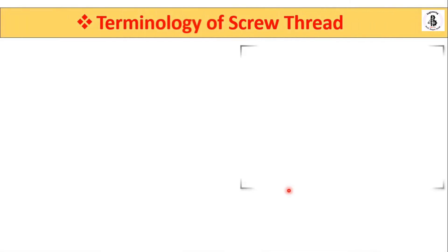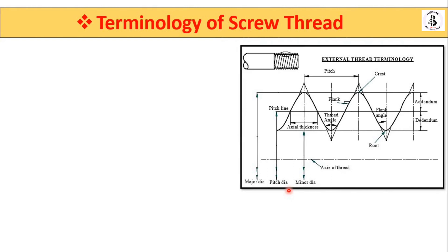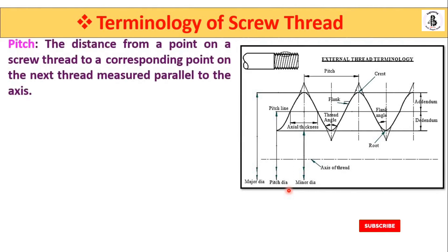Now let us look at the terminology in detail. Pitch is defined as the axial distance from a point on a screw thread to the corresponding point on the next or consecutive thread, measured parallel to the axis. This axis-parallel distance is the pitch, and it is an important terminology used for any kind of thread.